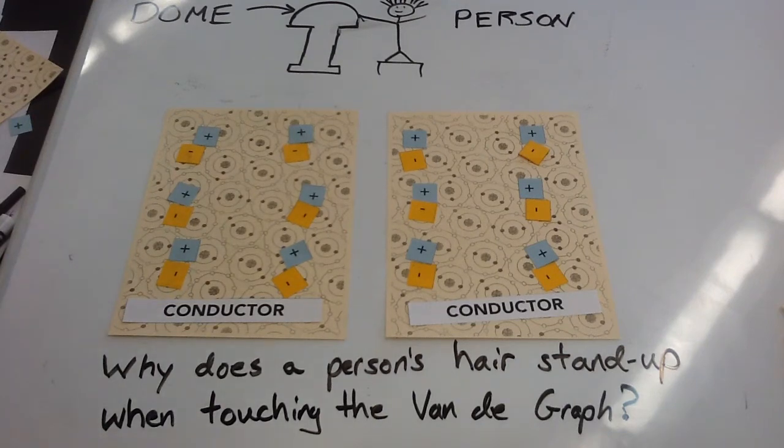In this video we're going to be explaining why a person's hair stands up when they're touching the Van de Graaff generator and they're standing on a crate.